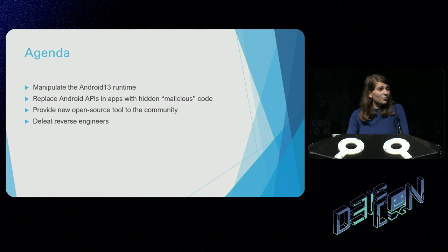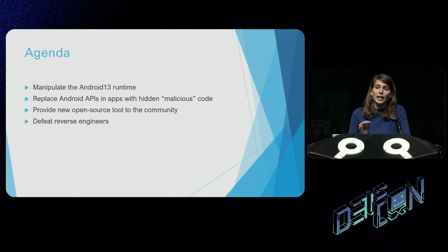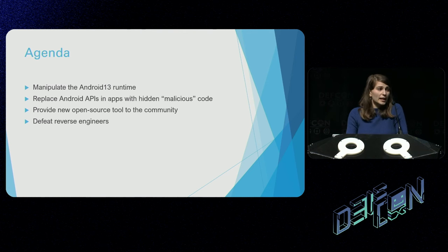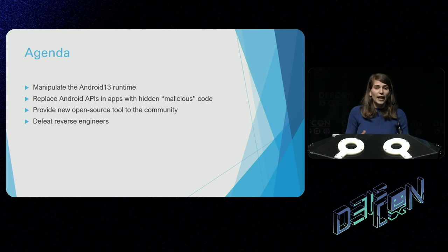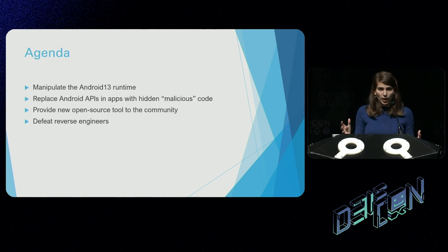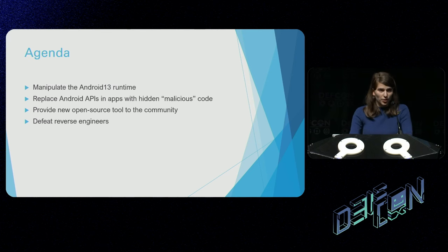Which brings me into my agenda for today. We're going to manipulate the Android 13 runtime and actually replace the official Android APIs while our application is executing to run our own custom code. This also works on Android 14 in the Upside Down Cake release, the beta version. I'm also going to provide a new open source tool to the community that I just released about an hour ago. This lets you import it as a library into your own Android applications for additional obfuscation of your Android APKs, and it's specifically designed for Android 13 and 14.